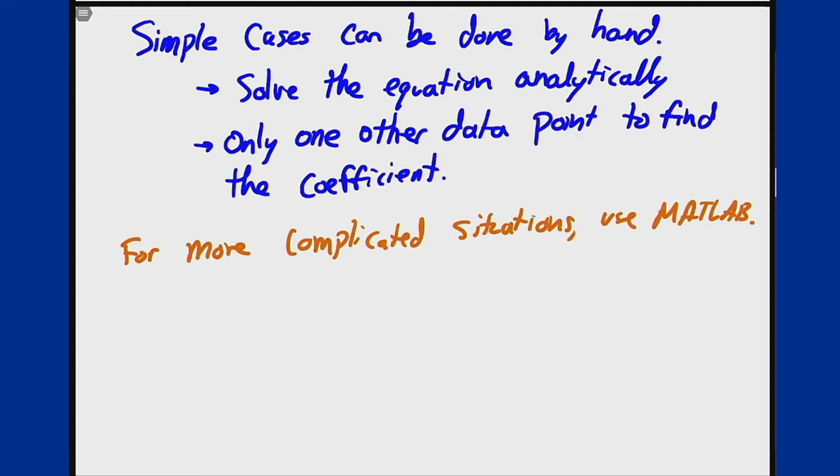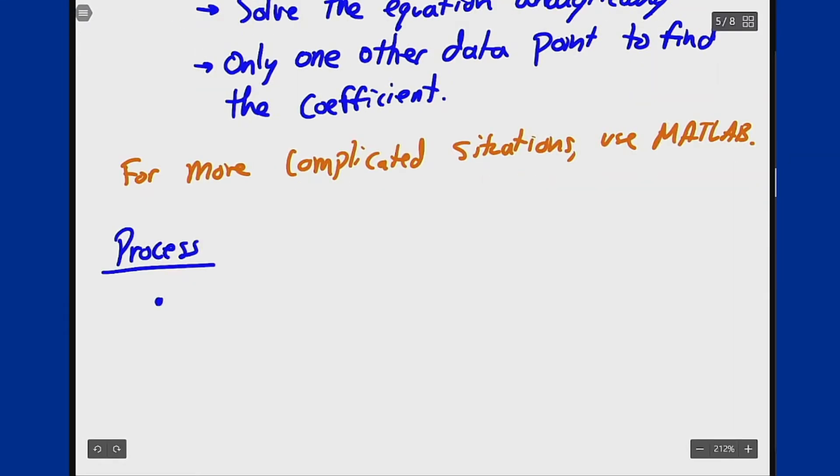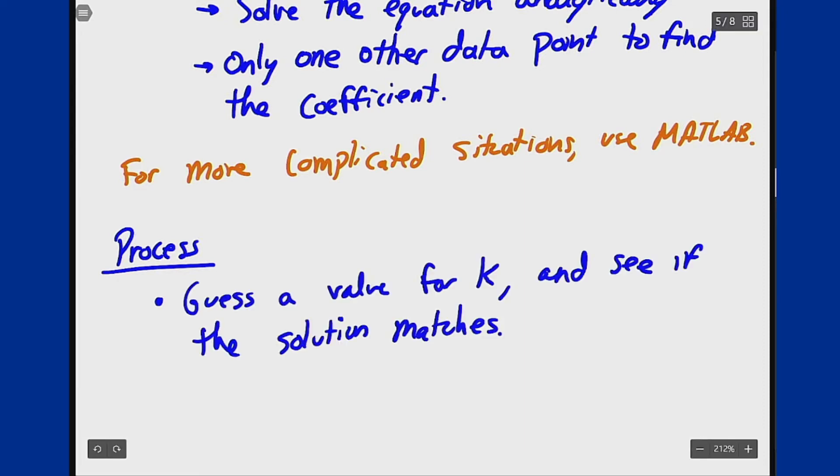So what's the process here? How would you do this if you had a little bit of help but were doing most of it by hand? Well, you could start by just guessing. You could guess a value for this coefficient k like we used above and see if the solution matches. You can then adjust k higher or lower based on what's going to make it match better or worse and eventually sort of approximate a solution from there.